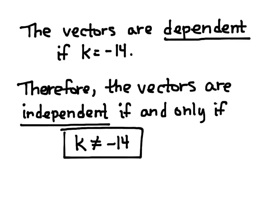And either one is a valid way of figuring out what K would have to be in order to make the vectors independent.